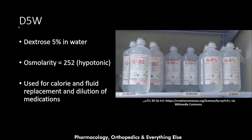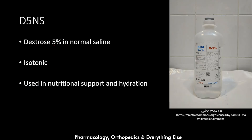Next is D5W — dextrose 5% in water. Its osmolarity is 255, making it hypotonic. It is used for calorie and fluid replacement and dilution of medications. There is also D5NS — dextrose 5% in normal saline — written as glucose 5% and NaCl 0.9%. This solution is isotonic and is used in nutritional support and hydration.